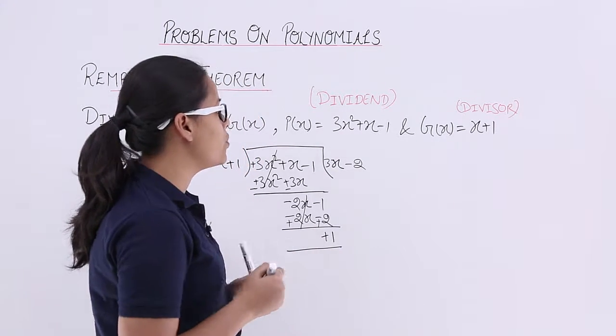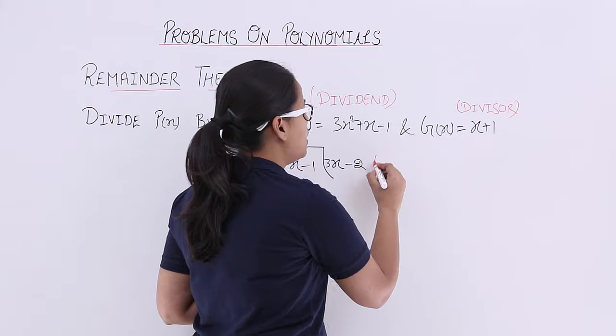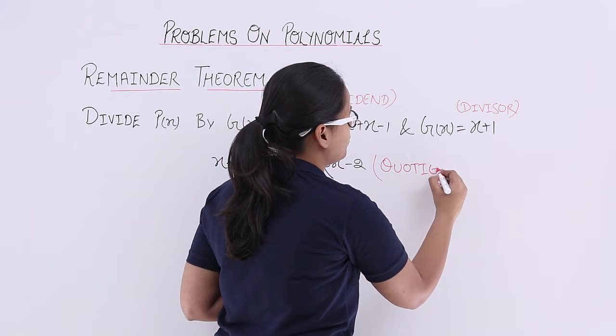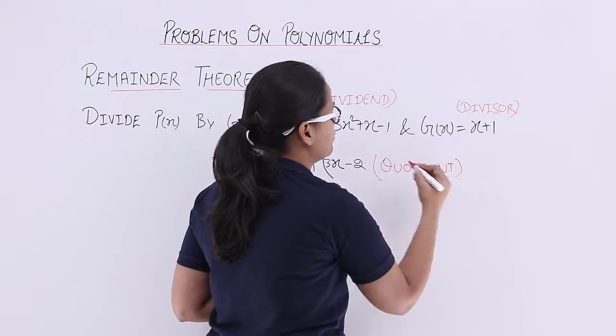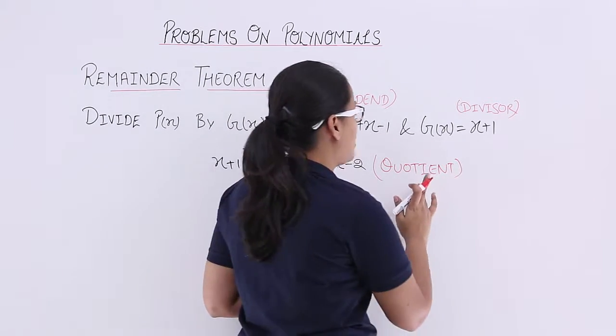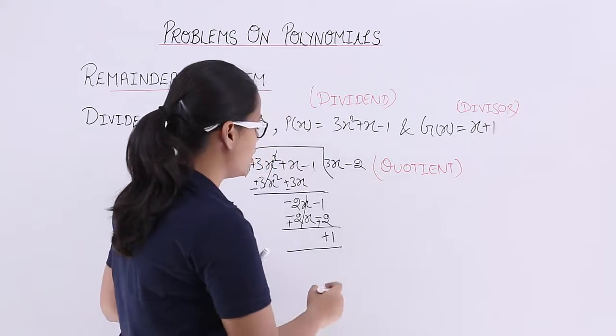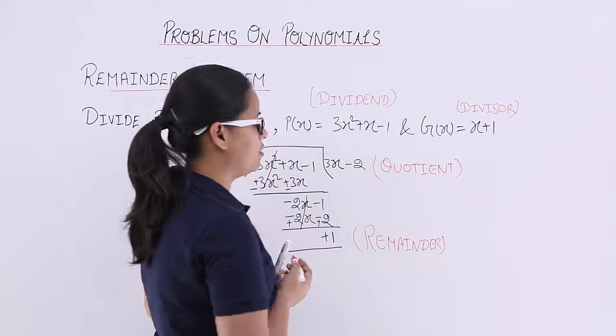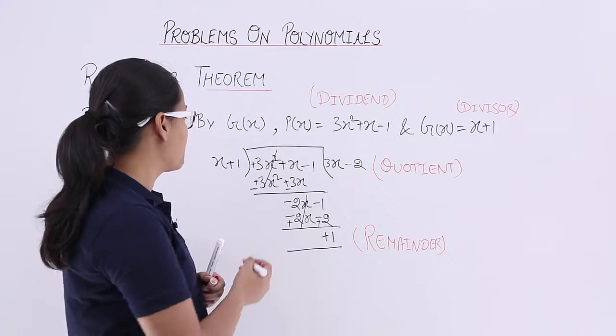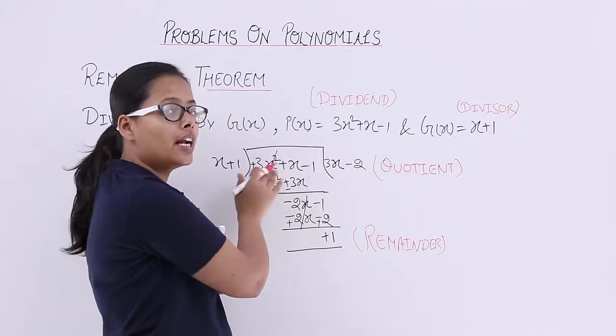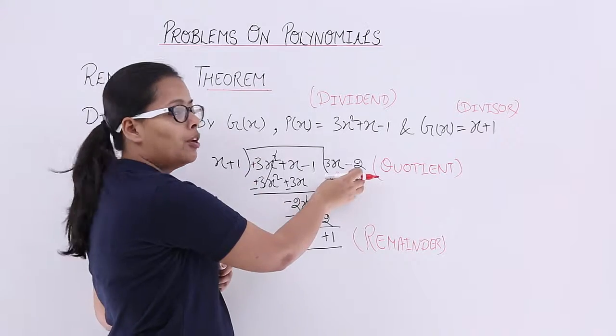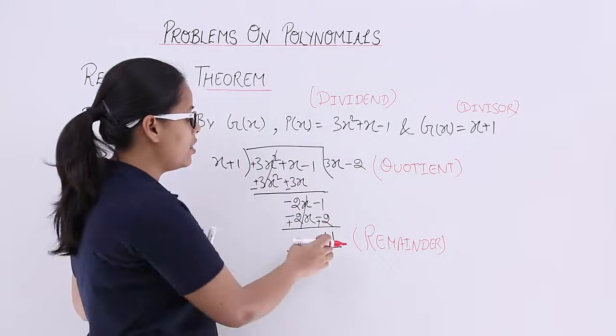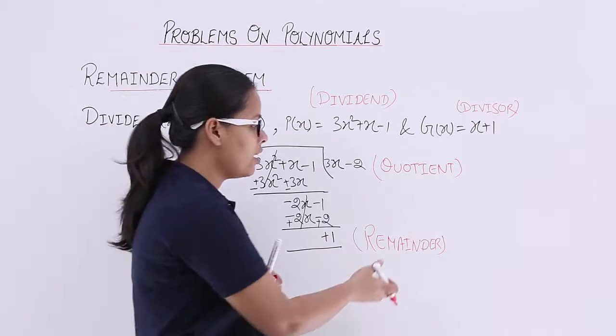Things you need to remember are this is the quotient and this is the remainder. When you divide this dividend by this divisor, you will be getting 3x-2 as the quotient and +1 as the remainder.